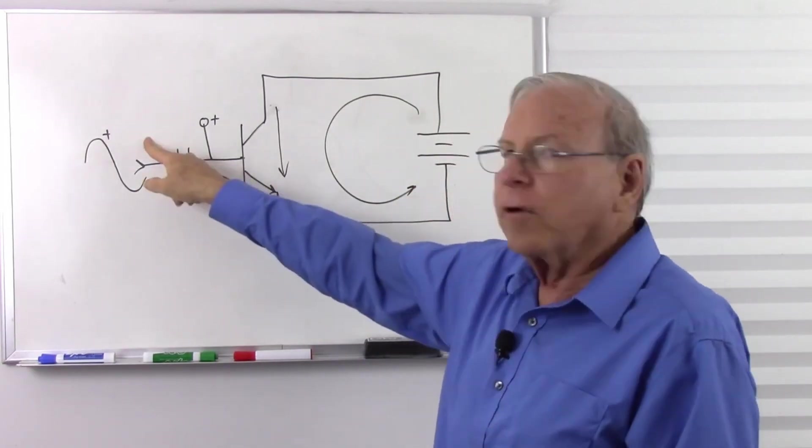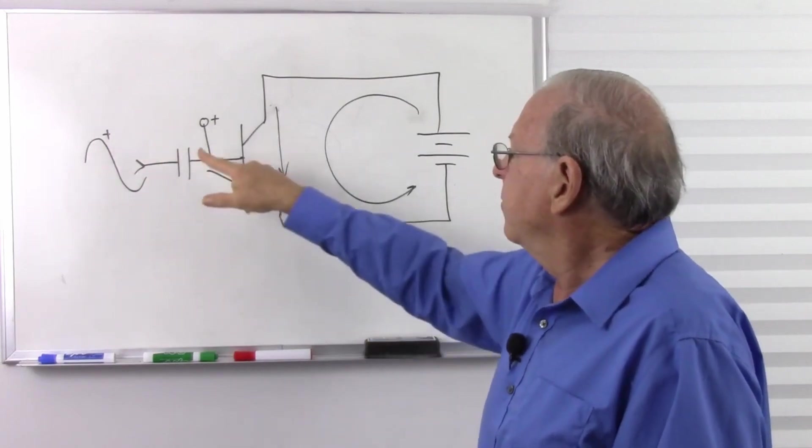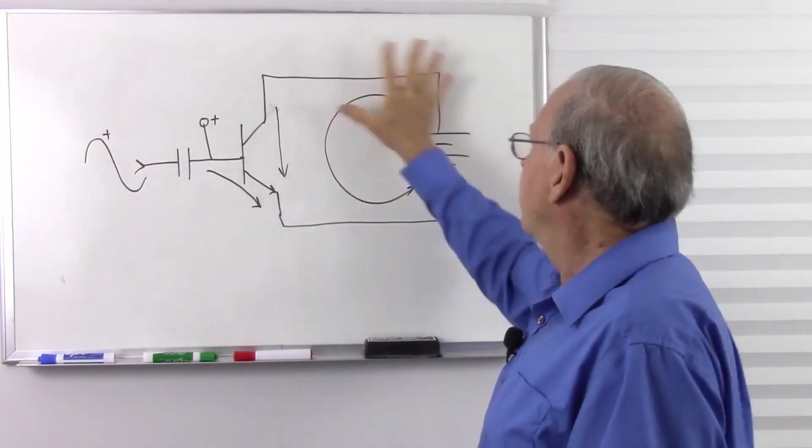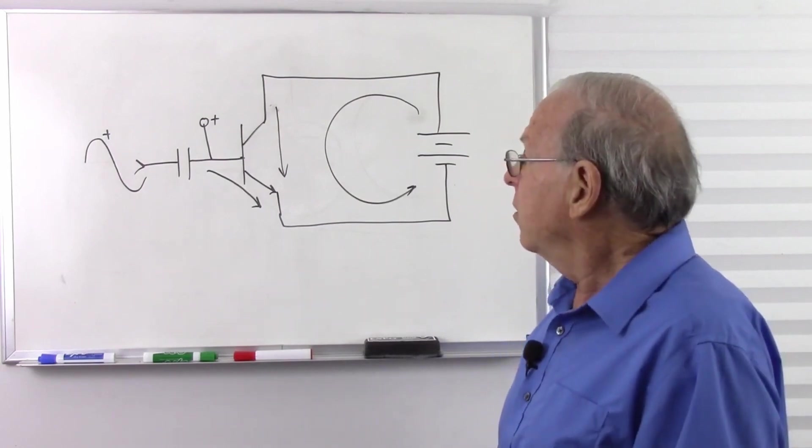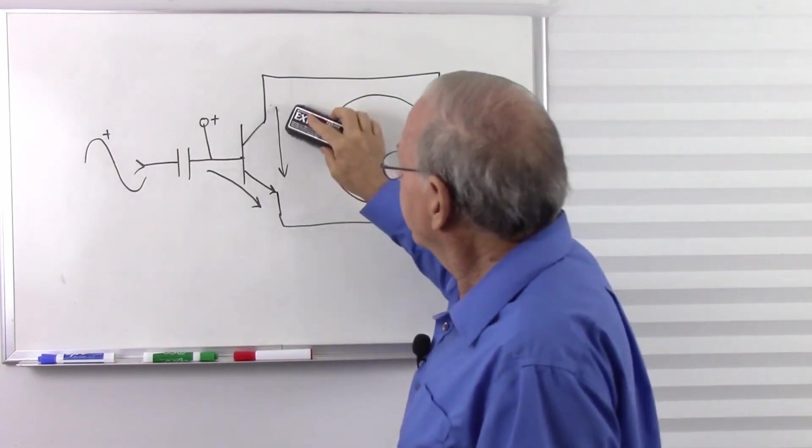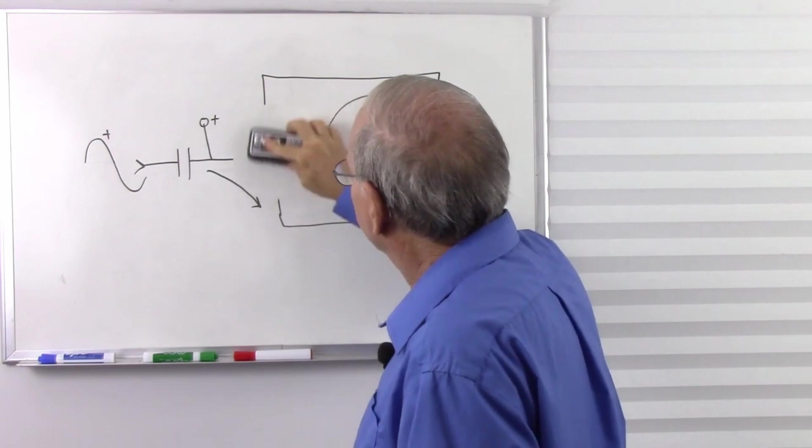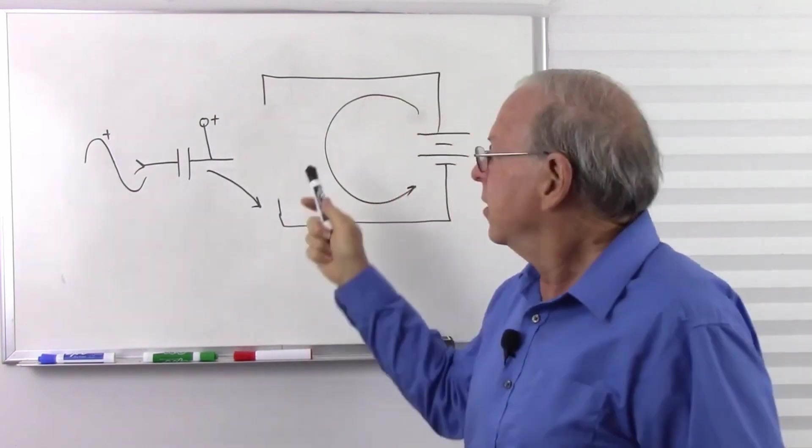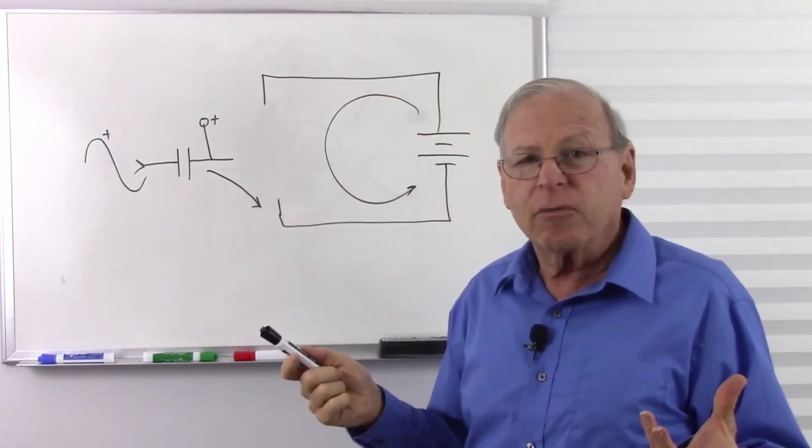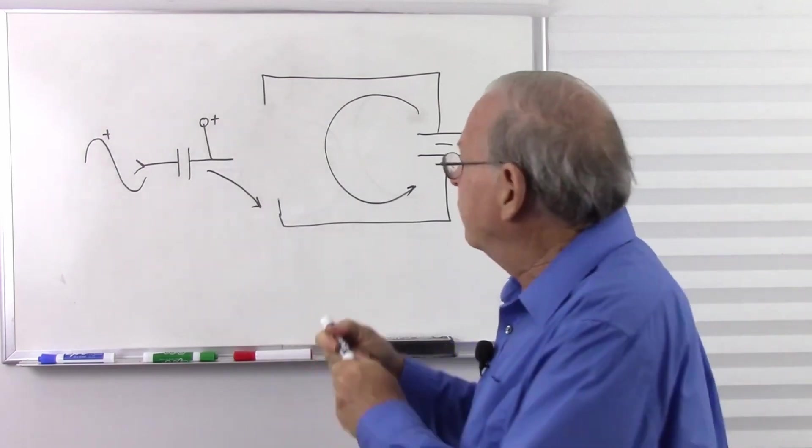So greater voltage here means greater base current. Greater base current means greater collector current. And we're looking at this all in conventional current. So let's just pull this out and replace it with a vacuum tube. And just like we don't look at the insides of a transistor when it's operating, we don't have to look at the insides of a vacuum tube.